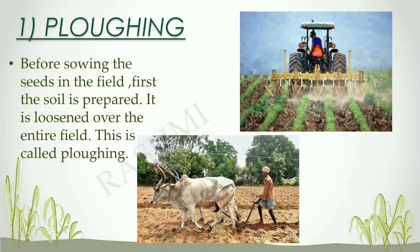The first stage of crop production is plowing. Before sowing the seeds in the field, first the soil is prepared — it is overturned or flipped over to mix well and aerate it.